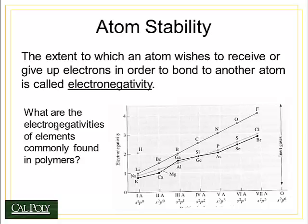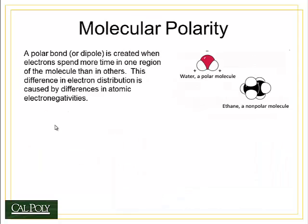Fluorine is the extreme atom — it has the highest electronegativity of all elements in the periodic table. Fluorine desperately wants to take electrons from other atoms, and it will form covalent bonds with oxygen, nitrogen, and carbon, and is often seen in polymers. When fluorine is present, it tends to cause what's called polarity in the molecule.